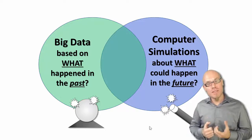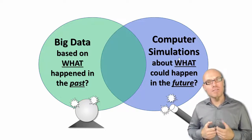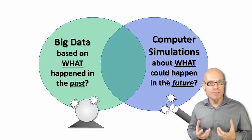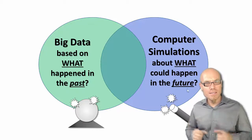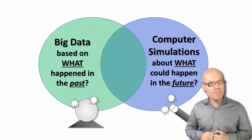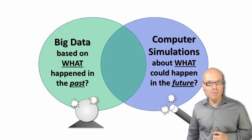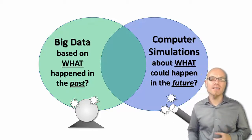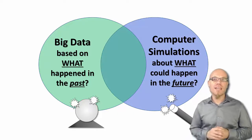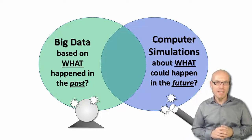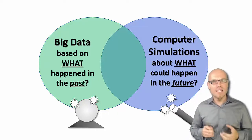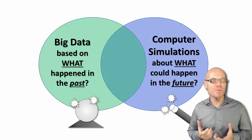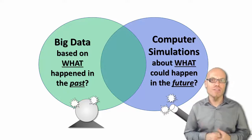Computer simulation helps us to theoretically explore what could happen in the future. That is very important because social systems are notoriously non-stationary, and data from the past has limitations when it comes to predicting changing futures.